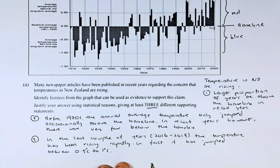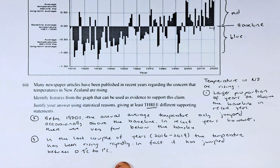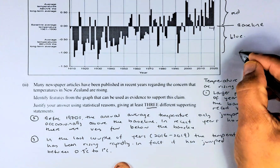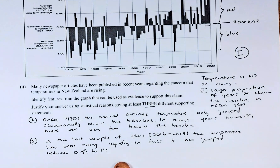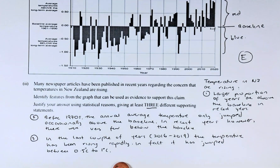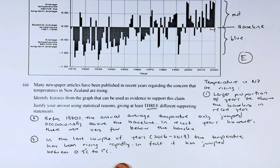All three points indicate that the temperature in New Zealand is rising recently. If you can answer all of them, you'll get excellence for this part of the question. Read again and see how you can justify and answer this question. I'll see you in the next video, which is on question 2B of the same paper. Cheers everyone, and have a good day.